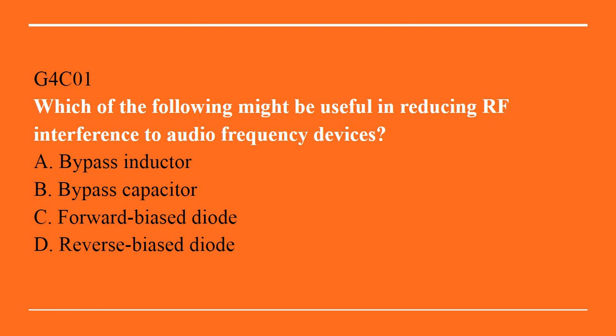G4C01: Which of the following might be useful in reducing RF interference to audio frequency devices? A. Bypass Inductor. B. Bypass Capacitor. C. Forward Biased Diode. Or D. Reverse Biased Diode. Correct answer: B. Bypass Capacitor.